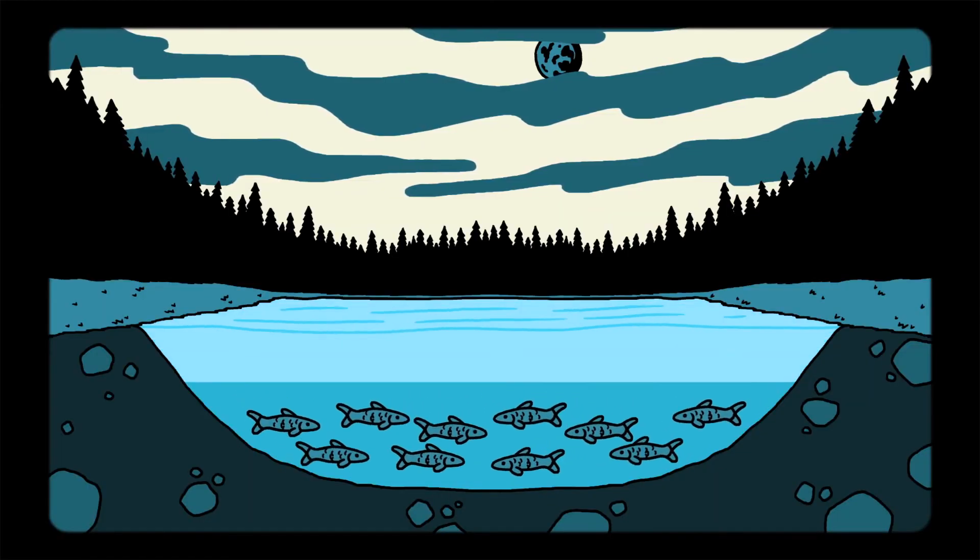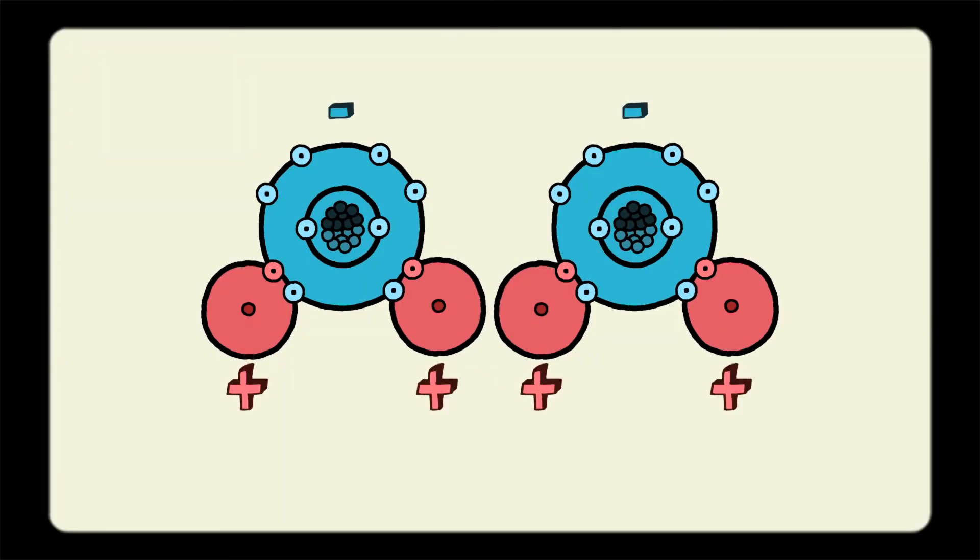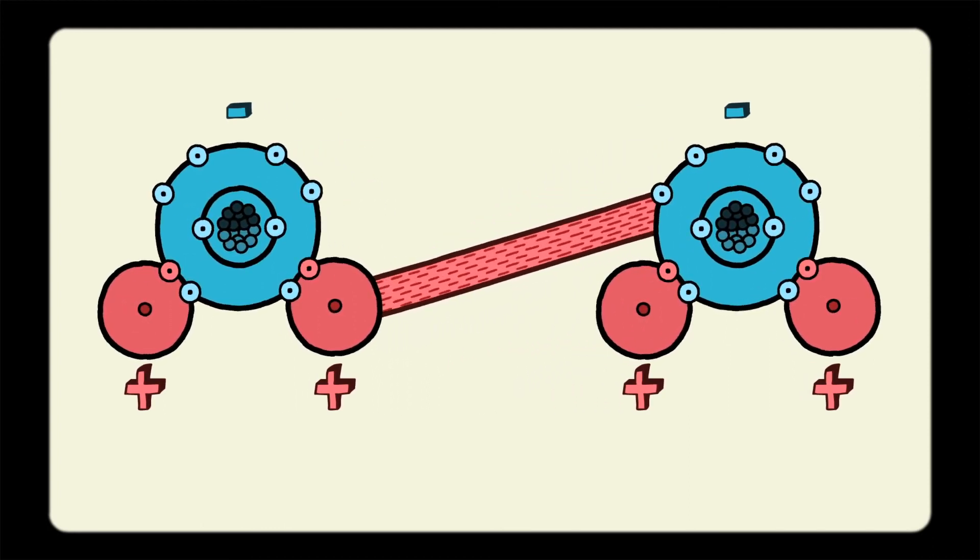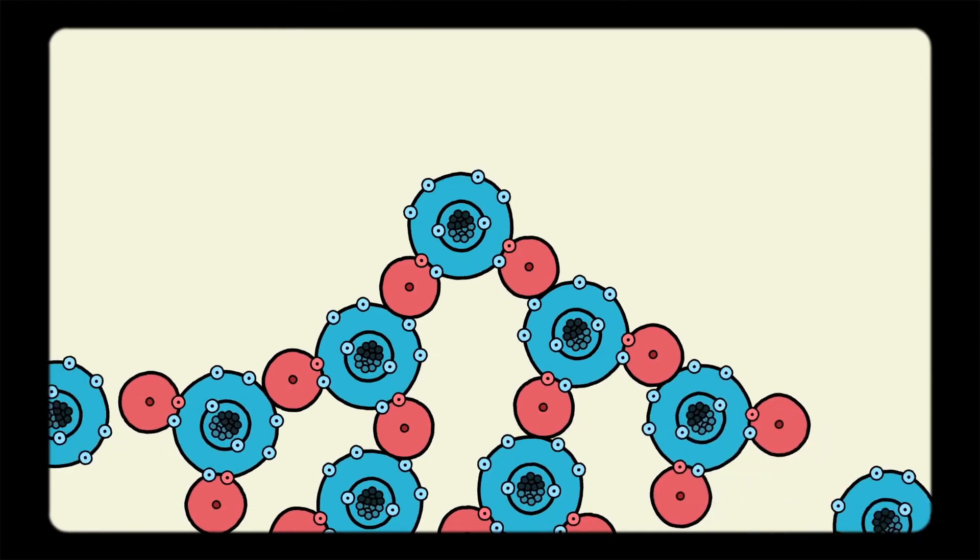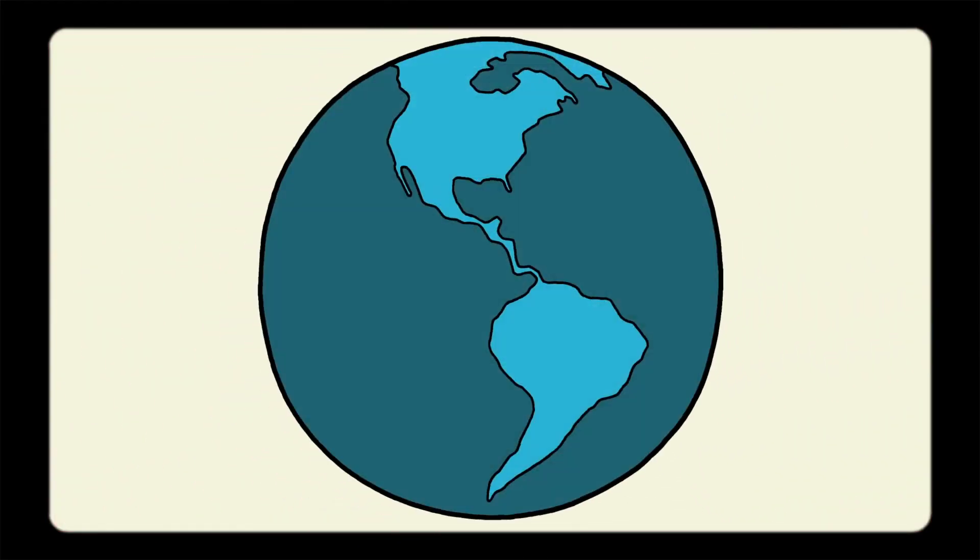That's why lakes freeze from the top down and aquatic life is able to survive through a cold winter every year. It is the polarity of the water molecule and the resulting hydrogen bonding that account for water's unique properties. So, the reason that water is so special, from inside your cells to the world's oceans, is simply because it is a polar molecule.